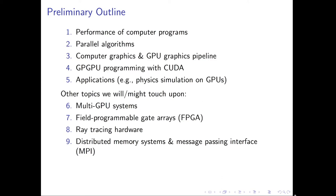Let us now have a look at the preliminary outline of this lecture. This lecture is mostly a high-performance computing lecture. In the first few sessions — roughly the first three or four — we will talk a lot about the performance of computer programs: how to assess performance, how to measure it, and what performance means when run on specific architectures like massively parallel ones. We will then discuss a bunch of parallel algorithms — not a rigorous parallel algorithms class, just those relevant to other topics of the lecture.